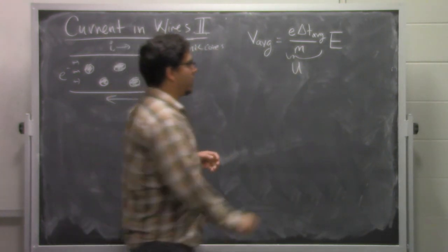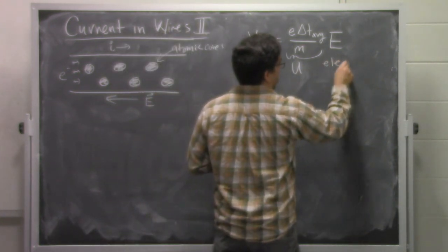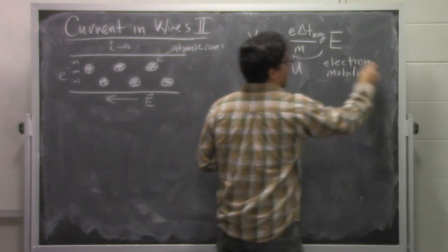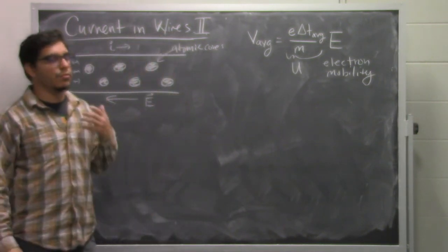We're going to give it the symbol U, and it is the electron mobility. It tells us, in a sense, how mobile the electrons are. That is, how free to move through the material they are.